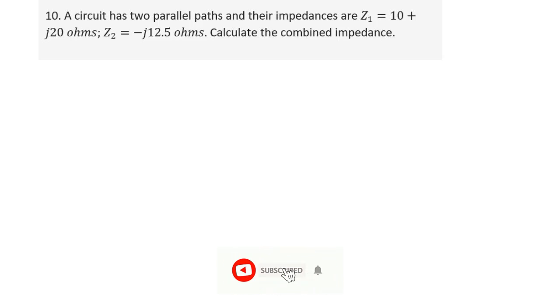Let's try this set of questions. Question number 10: A circuit has two parallel paths and their impedances are Z1 equals 10 plus J20 ohms, and Z2 equals negative J12.5 ohms. Calculate the combined impedance.